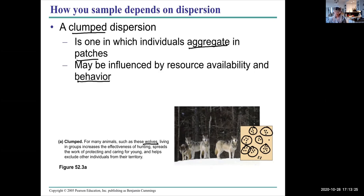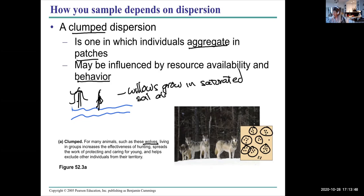For resource availability, for example along riversides you will find a lot of willow trees. Willows grow in saturated water or saturated soil along lakesides or riversides, so they tend to be a clumped distribution.